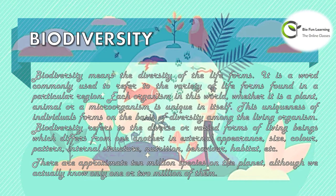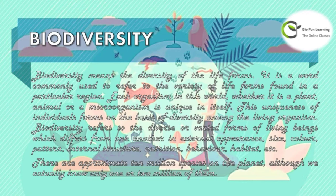So first, let's look at biodiversity. What is biodiversity? Biodiversity means the diversity of life — the variety of life forms found in a particular region. Each organism in this world, whether it is a plant, animal, or a microorganism, is unique in itself. Do you know there are approximately 10 million species on the planet, although we actually know only one or two million of them?